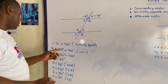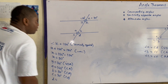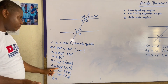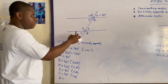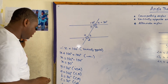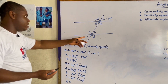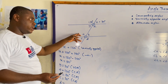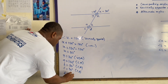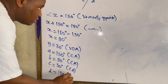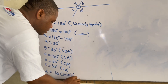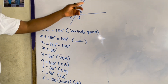You can also get the value of D, and there are two ways of getting it. D is vertically opposite A, which is 150 degrees. Or D is corresponding to Z, which is also 150 degrees. So D equals 150 degrees — it is either vertically opposite A or a corresponding angle to Z.